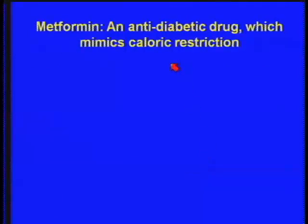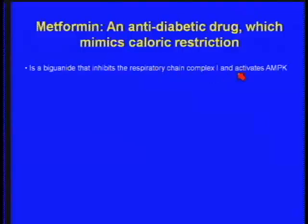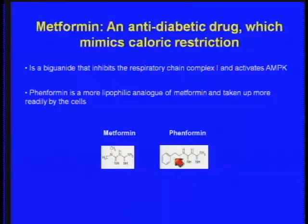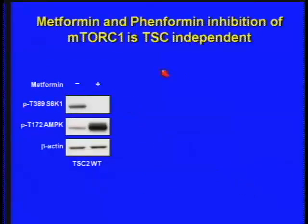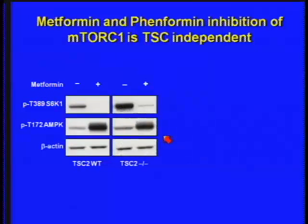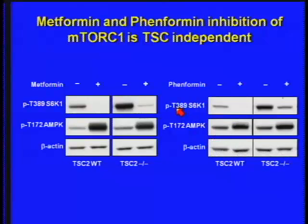Metformin is a major antidiabetic drug — about 100 million people are taking it daily — and we know that it mimics caloric restriction. It's a biguanide which inhibits complex 1. It's thought to have its major effects by reducing gluconeogenesis and increasing insulin sensitivity in peripheral tissues. Metformin is thought to operate by activating AMP kinase through TSC. We added metformin to TSC wild-type cells and TSC2-deficient cells — we activate AMP kinase in both — but we still suppress the TOR pathway even in the absence of TSC, and we get very much the same results with fenformin. This suggested, for the first time, that we could potentially start treating patients who suffer from tuberous sclerosis syndrome with metformin, and studies like that are going on right now based on this finding.